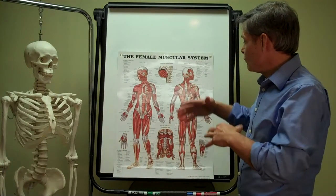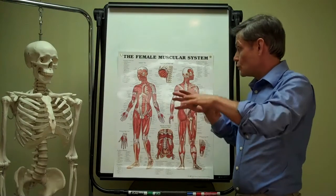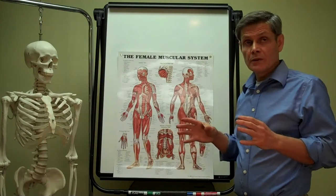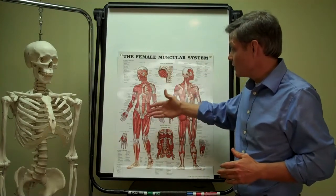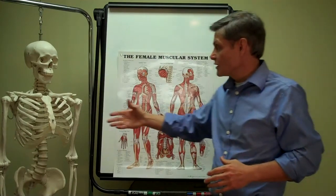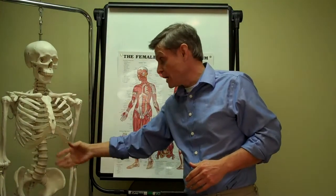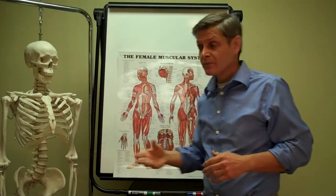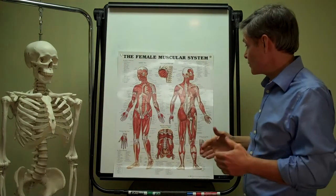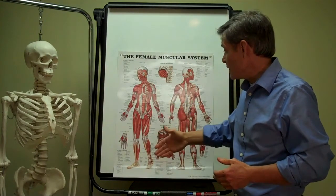We divide the muscular system into two main parts. We call them the muscles of the head, neck, and trunk — which means the muscles attaching to the skull and the spine and the ribs — and then the muscles of the extremities, the muscles that attach to the arms and legs.